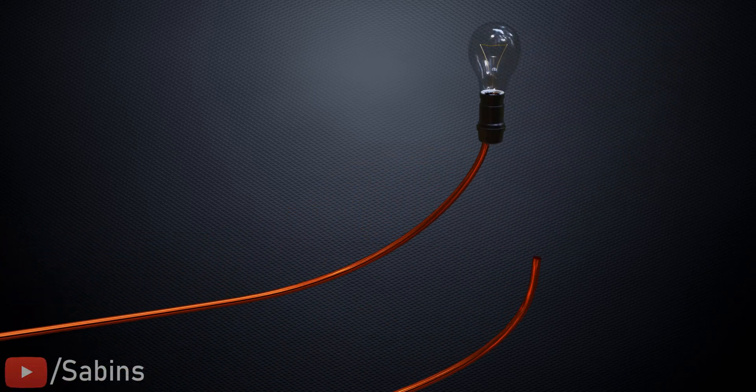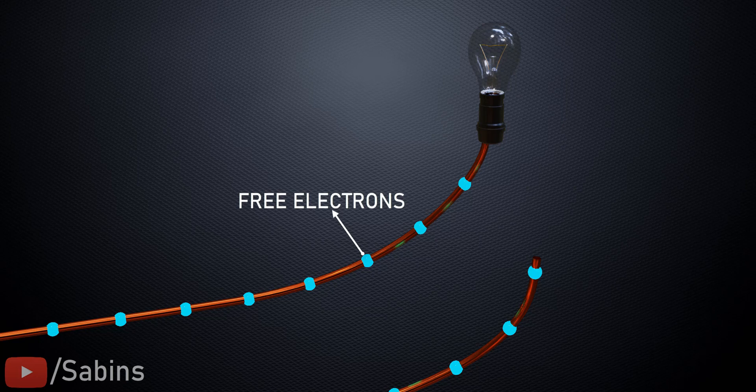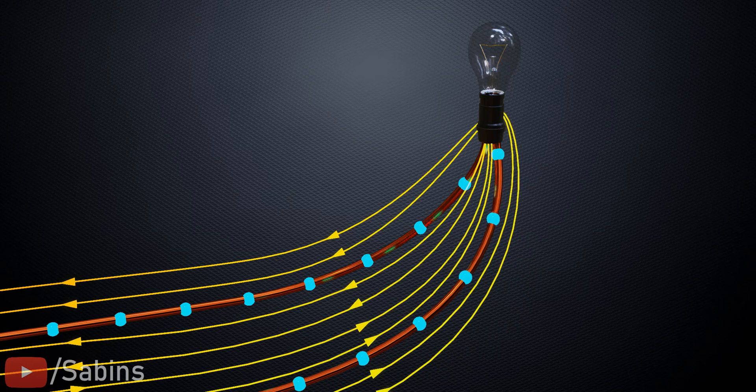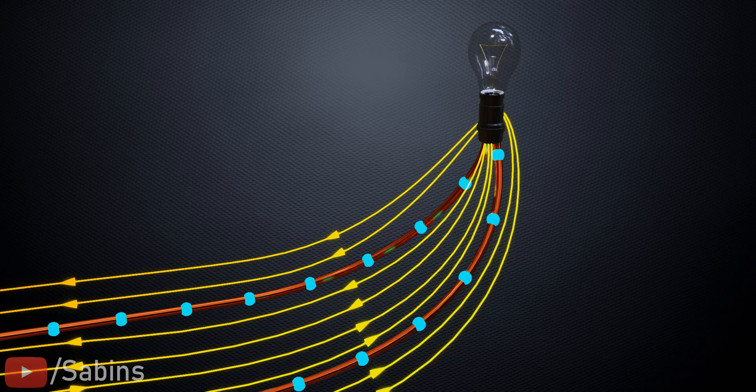Free-to-move electrons are always present in a conductor. What really happens is that when you close this circuit, an electric field is established along the conductor almost instantaneously. This electric field will push the nearby electrons to the bulb, causing it to glow.